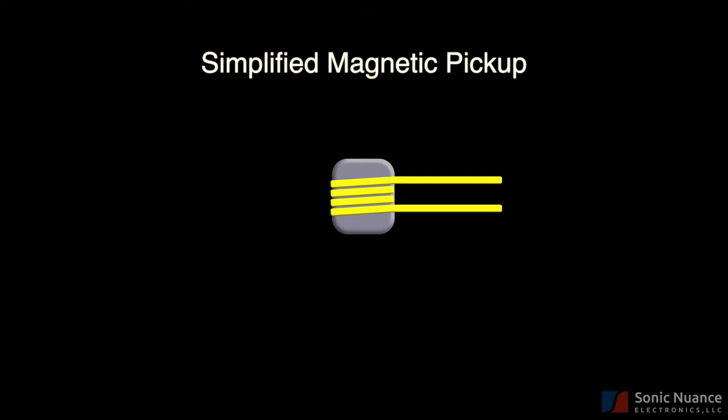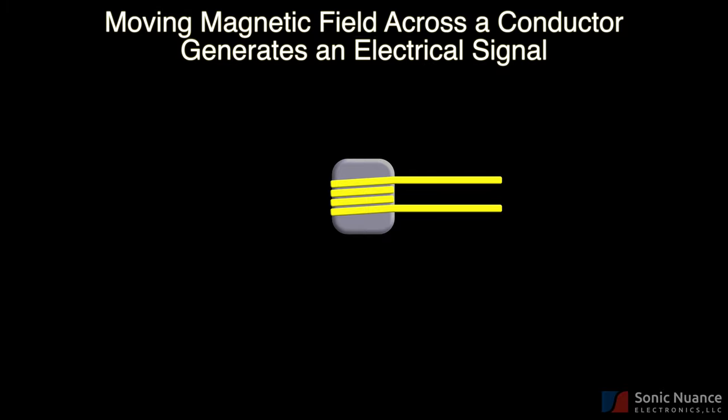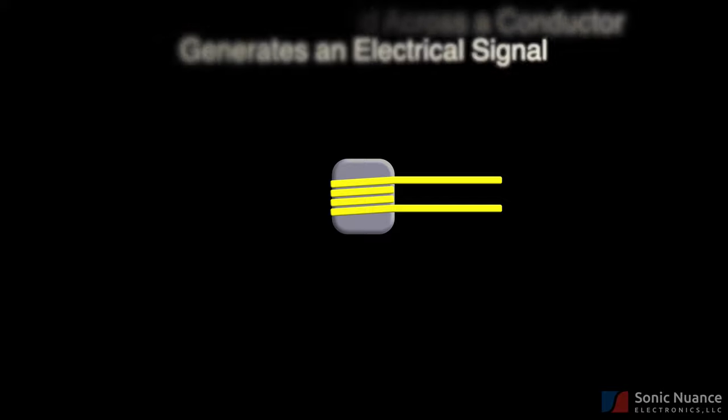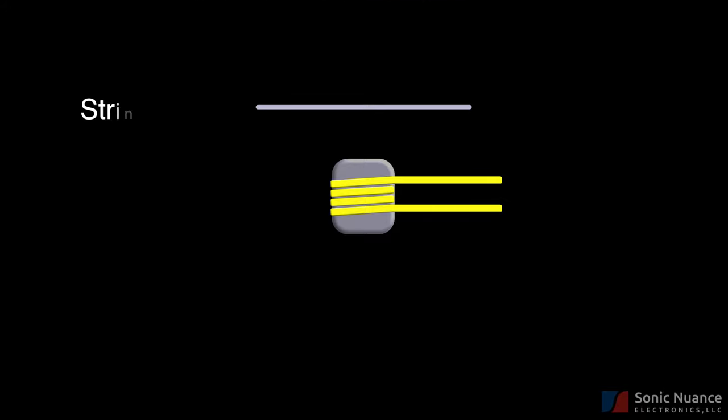So the question is, how is the pickup going to do this? We know from high school physics that a moving magnetic field across a conductor generates an electrical signal. Magnetic pickups achieve this by converting physical movement of the string into magnetic field movement in a coil of wire, and finally, into an electrical signal.